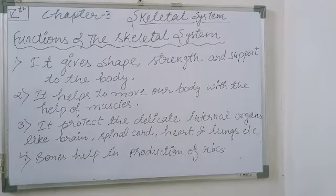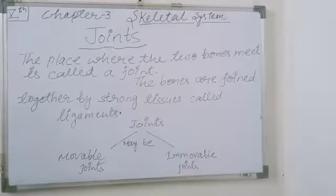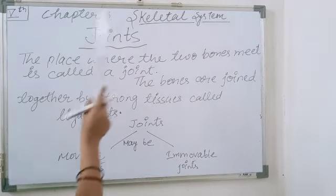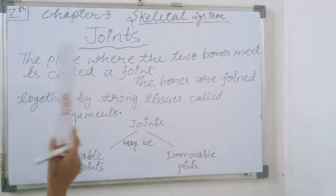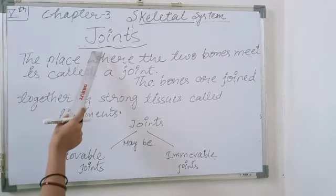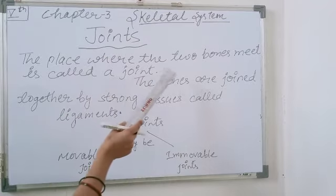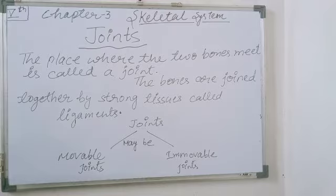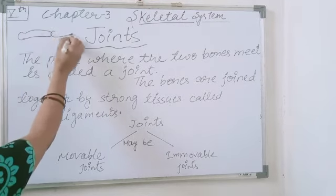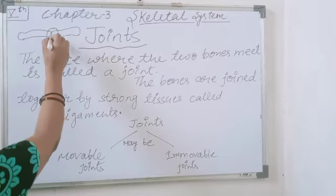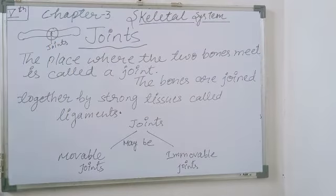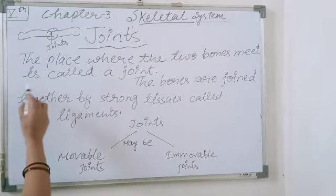Next we will discuss about joints. How many joints are present in the skeletal system? Overall in the body there are many types of joints. What do you mean by joints? The place where two bones meet is called a joint.